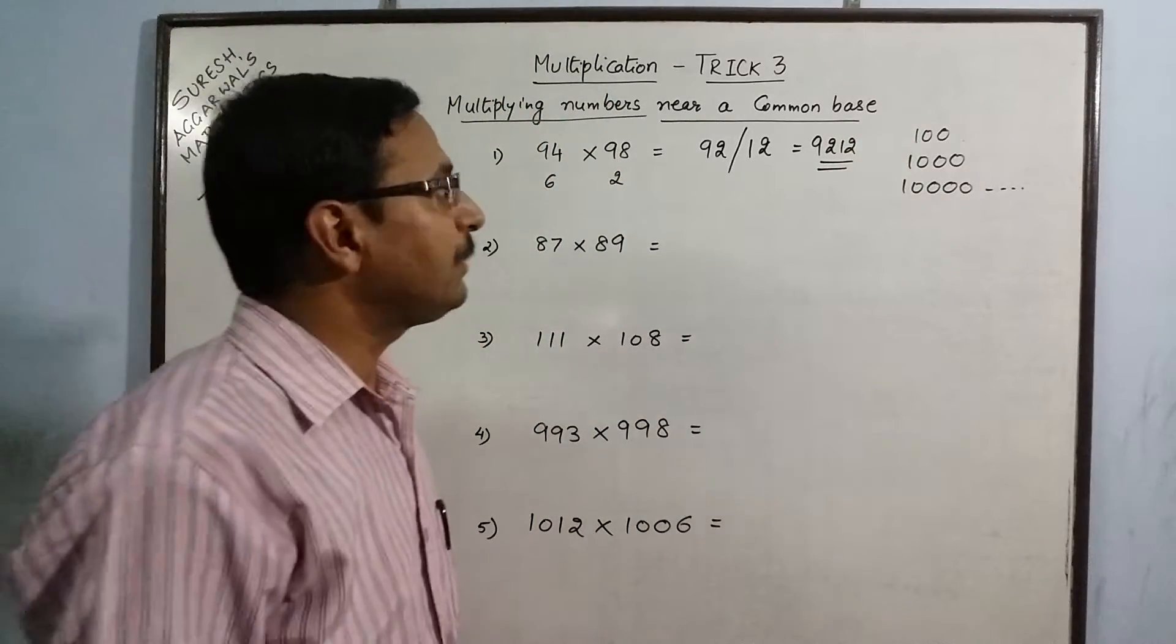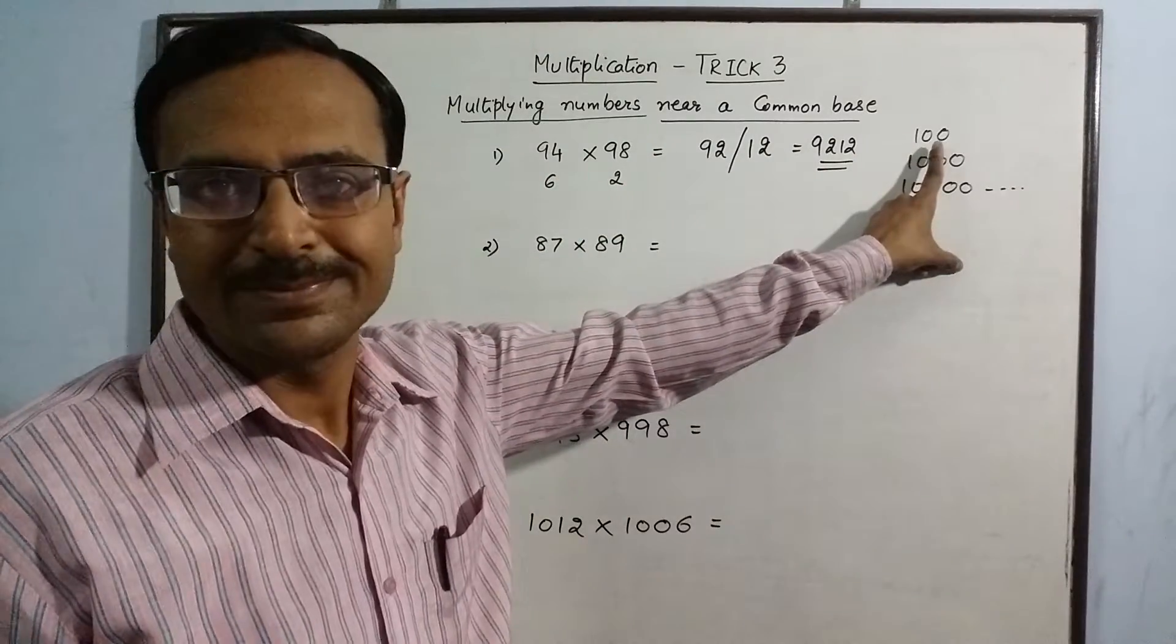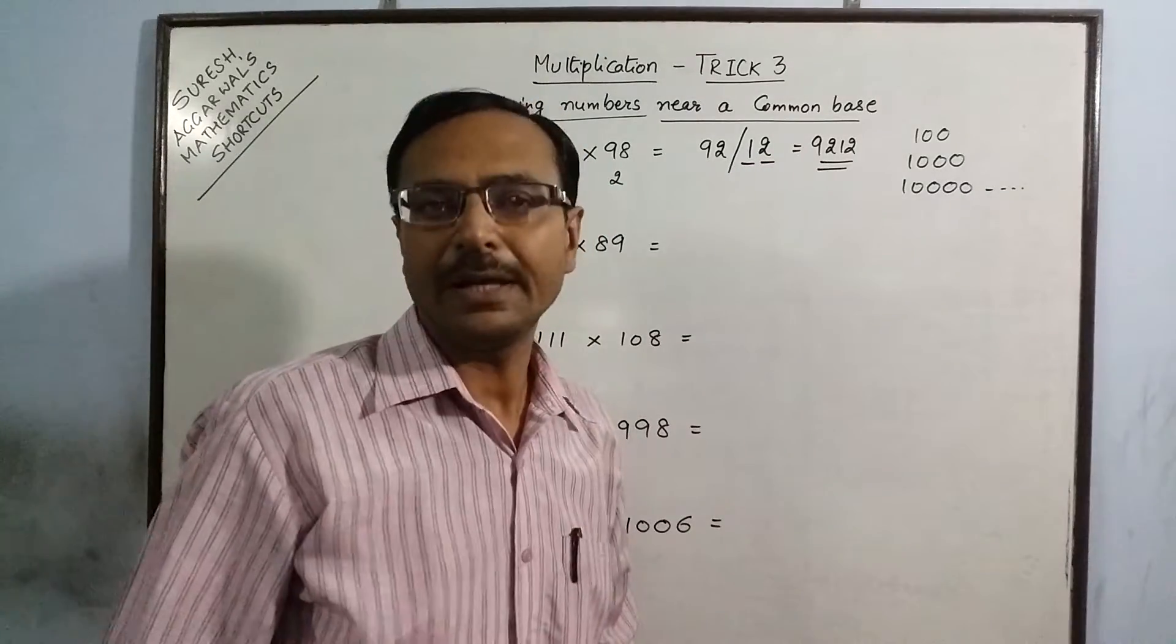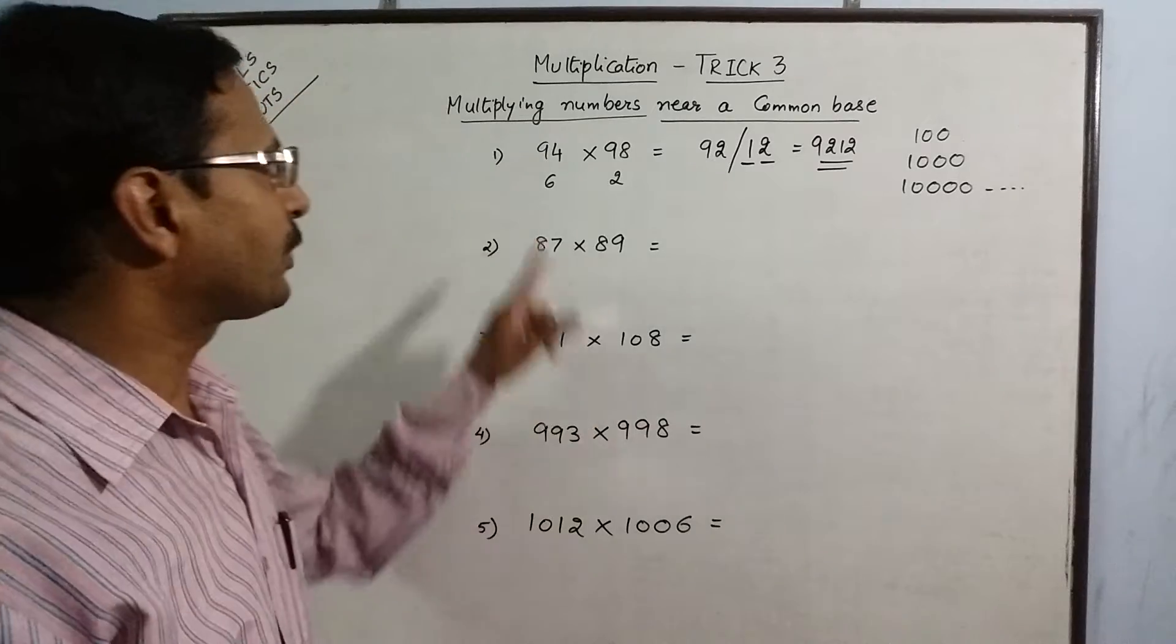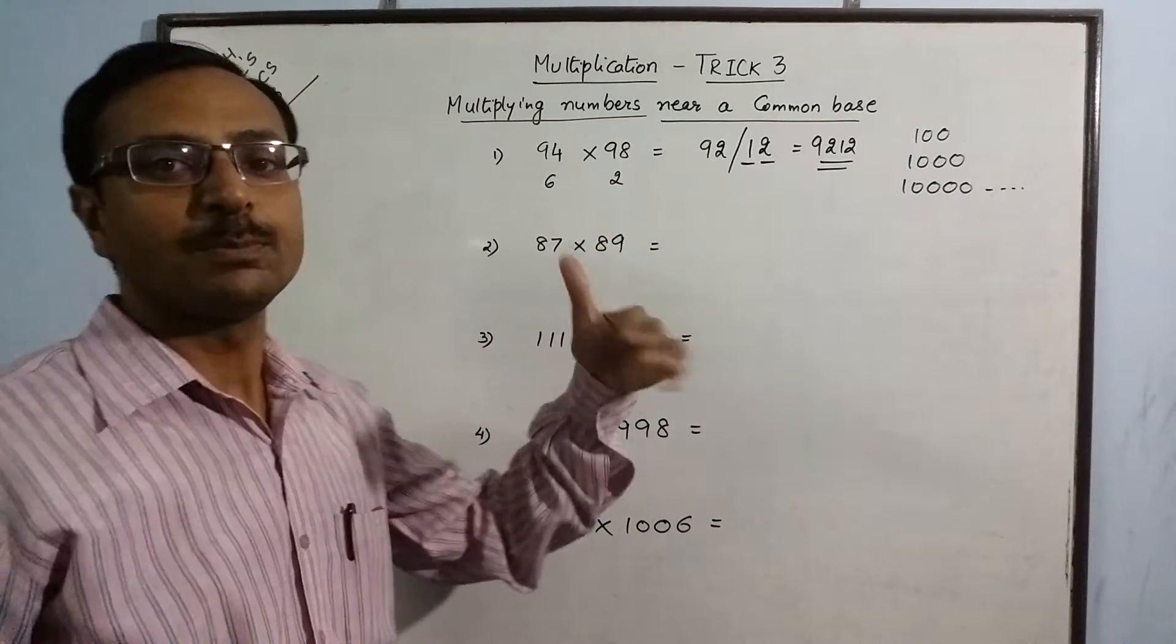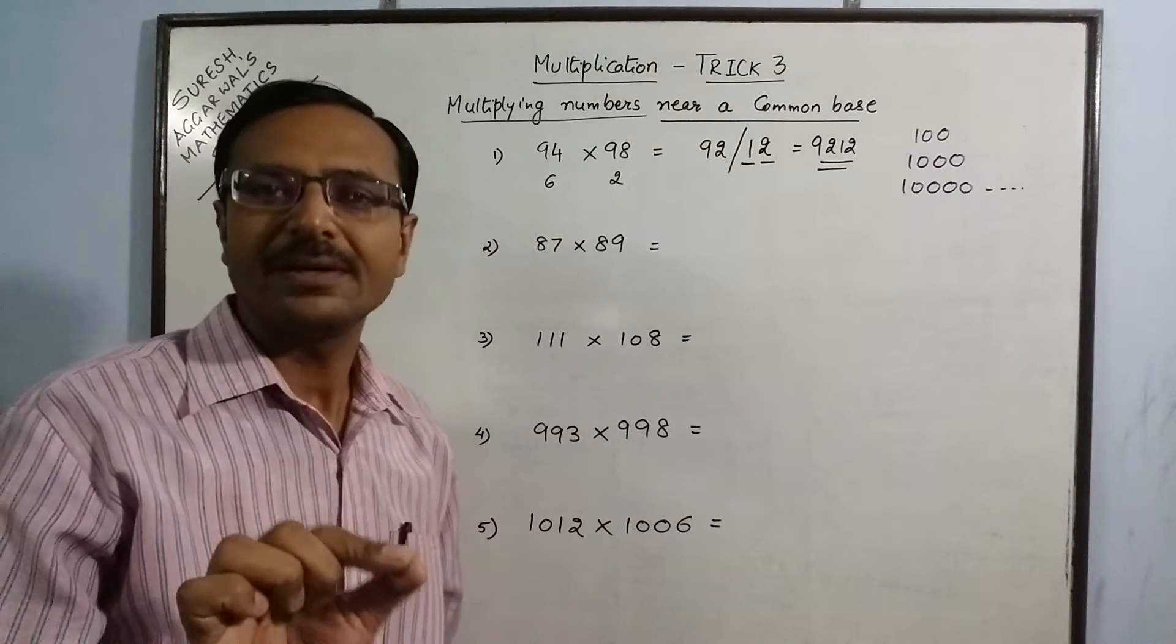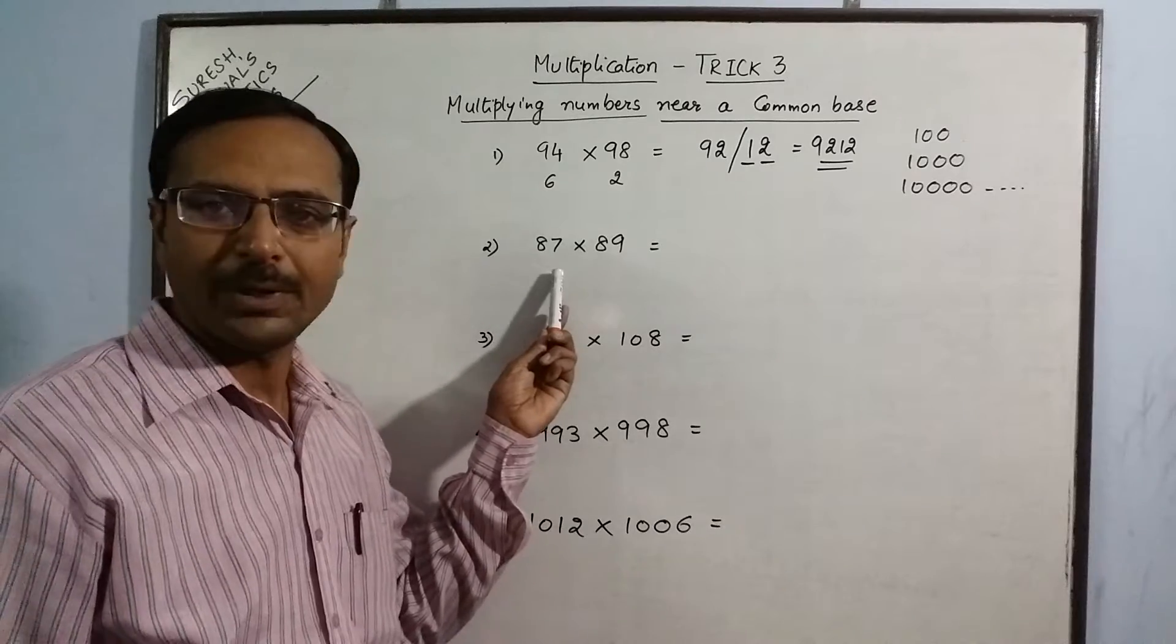It is very important to note here that the common base contains two zeros. So, this part of the answer will contain two digits only. If the product of these two numbers contains more than the number of zeros, then the method slightly changes, as can be demonstrated in the next example.